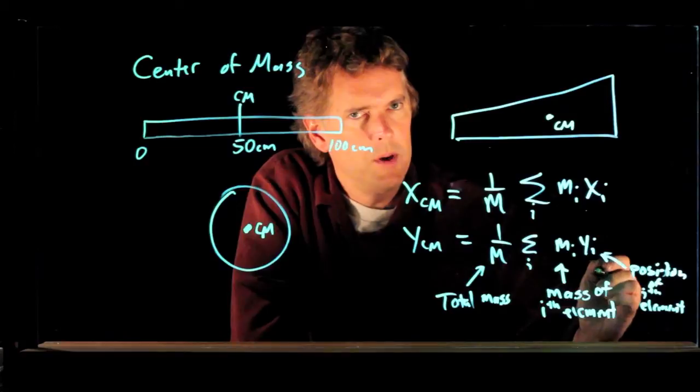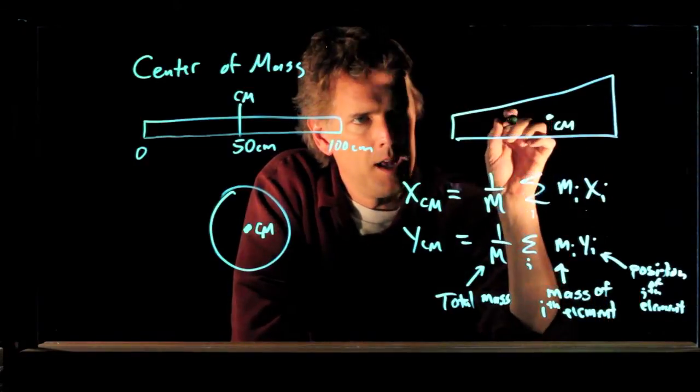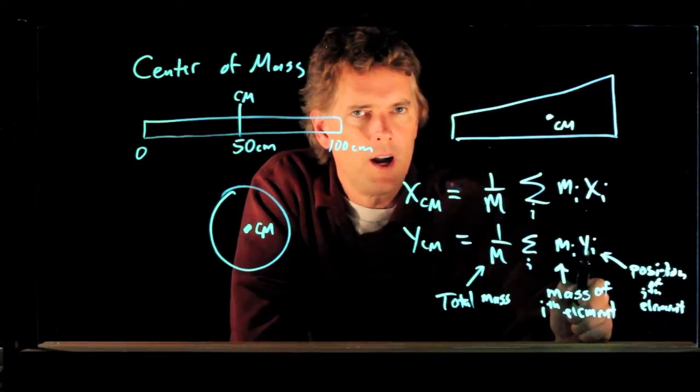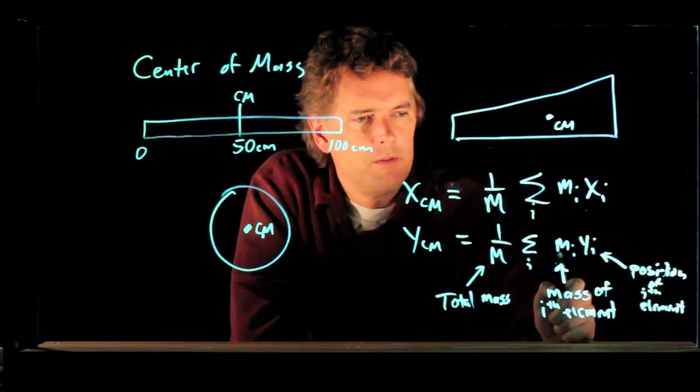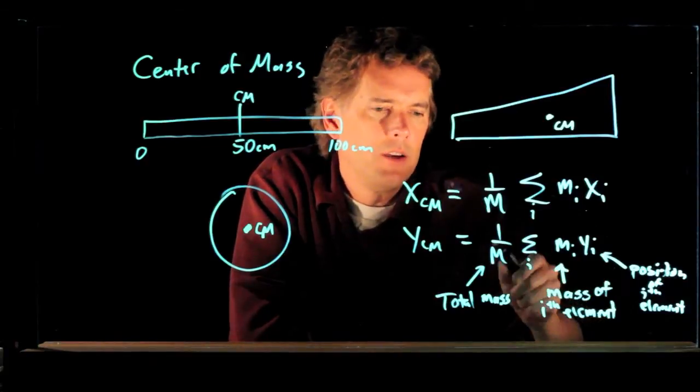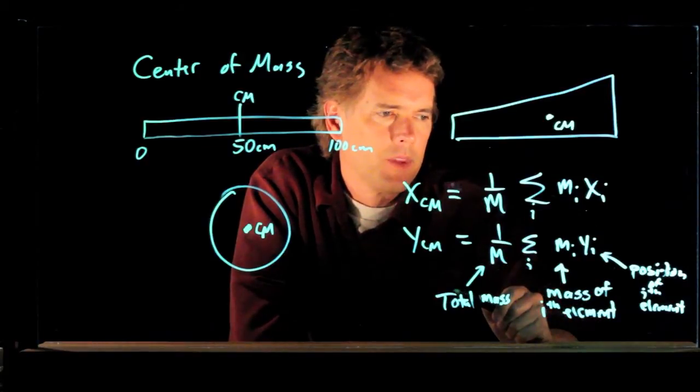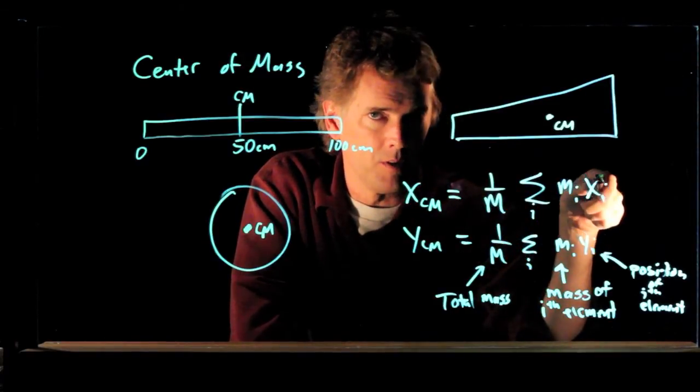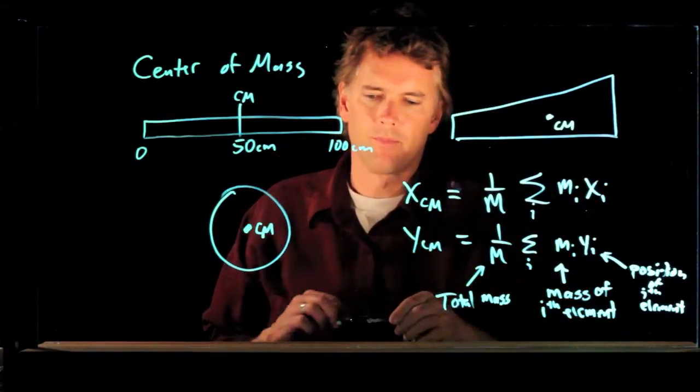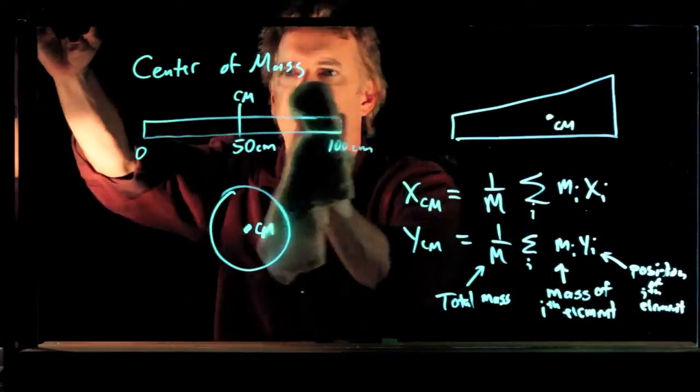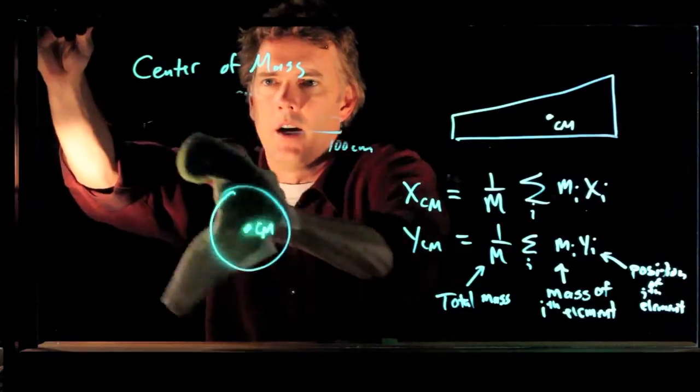So when you do these summations, you have to pick out every point in the structure, figure out what its y sub i is, figure out what its mass is, add all those up, and when you're done, you divide by the total mass. And you do the same for the x equation, it's just that it's the x position instead of the y position. So let's see if we can calculate that for an object.